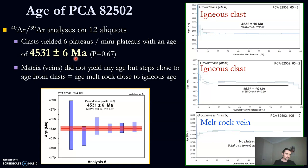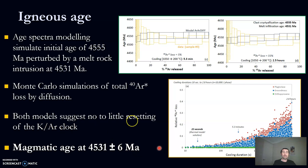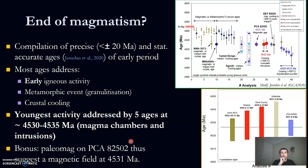We dated the clasts and got an age of 4531 million years, plus or minus 6 million years — that's a robust age. One of the key issues was whether that's the igneous age or whether it could have been reset. We did a bunch of modeling, and those models tell us that the Argon system wouldn't be affected by such a small impact or the heating from the vein. So this is really a magmatic age — we really dated the lava flow.